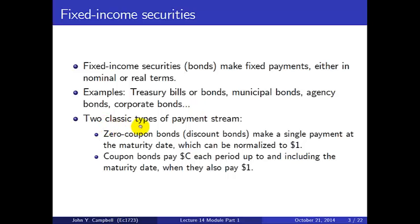There are two classic types of payment stream. In principle, a fixed income security can promise any stream of payments of an arbitrary shape. But the two classic examples are zero coupon bonds, also known as discount bonds — these make a single payment at the maturity date, which can be normalized to $1 for convenience. Coupon bonds pay C dollars each period up to and including the maturity date, when they also pay $1. The $1 is a normalization.